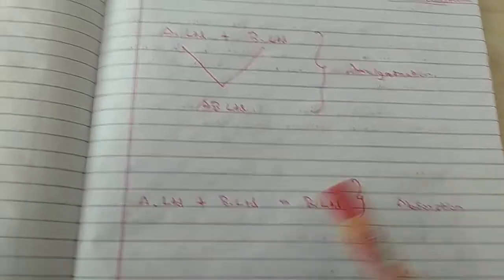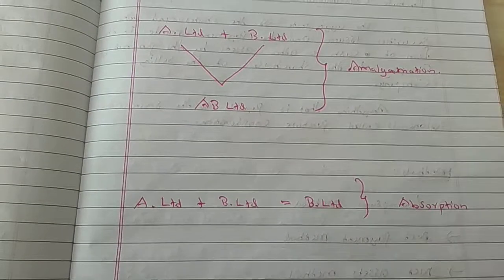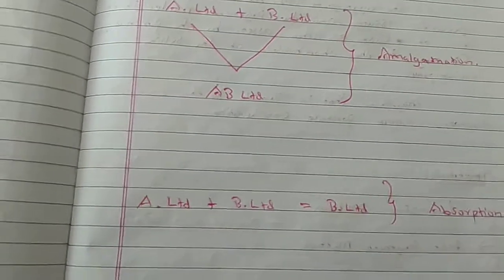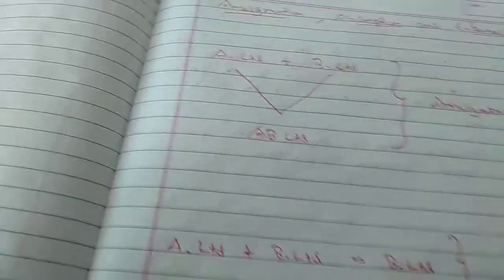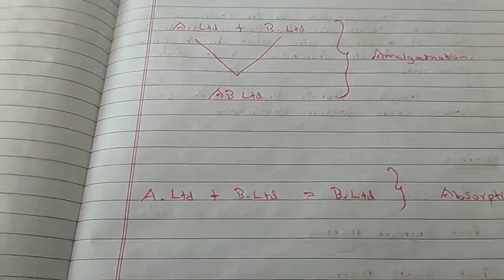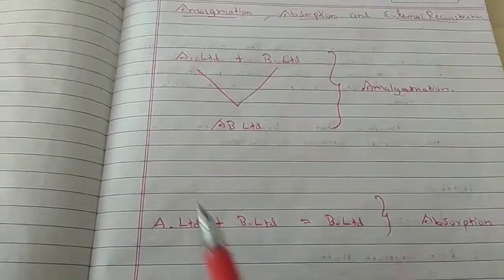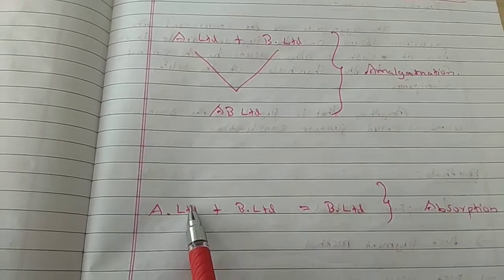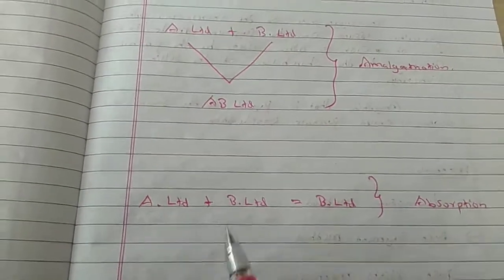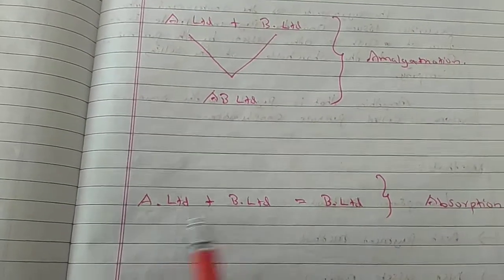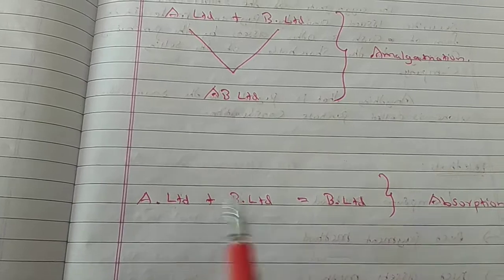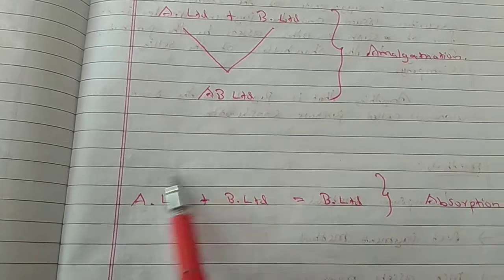Two other cases: Absorption. In Absorption, there is already A Limited Company and B Limited Company — two companies — and one company absorbs the other. That means one company is already existing. That is called Absorption.